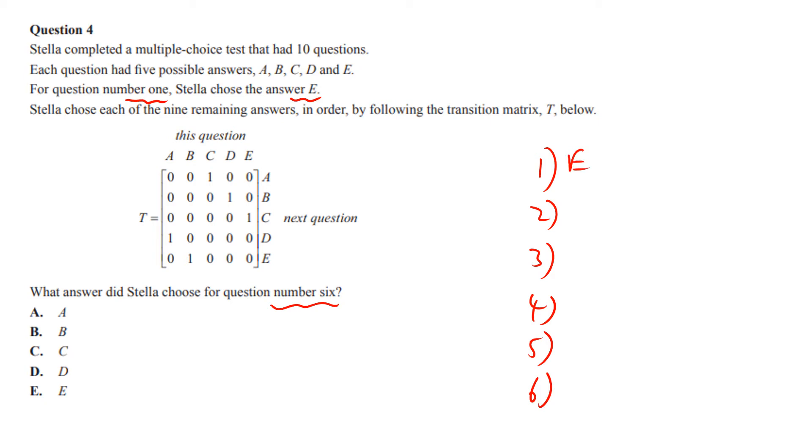So if you're at E you then go to C. If you're at C you then go to A. If you're at A you go to D. If you're at D you go to B. And if you're at B you go to E.